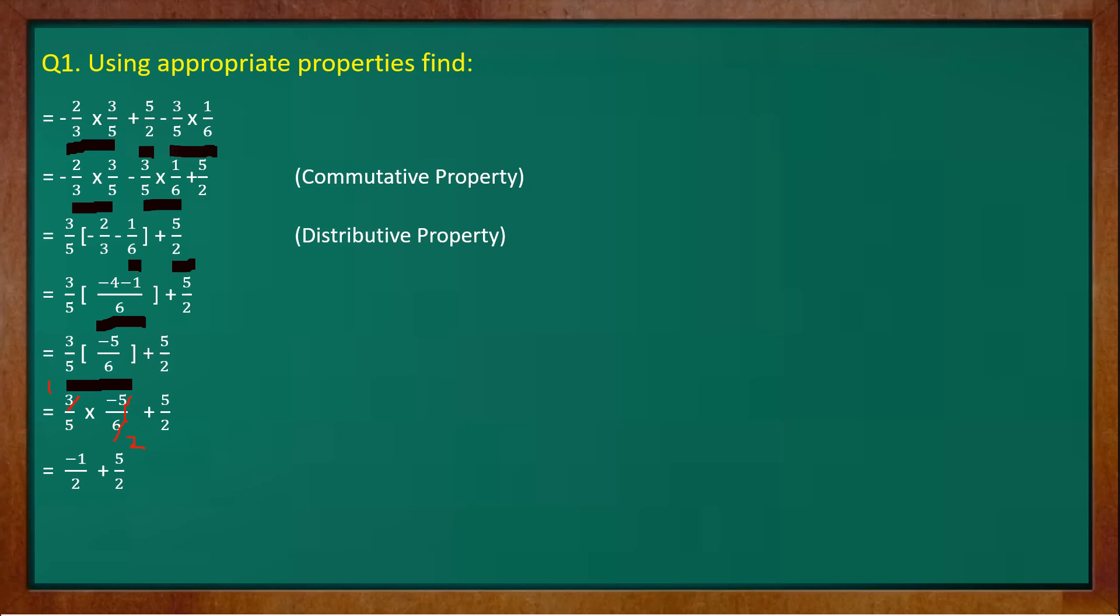Now again we have to take the LCM. So the LCM of 2 and 2 would be 2. In numerator we will get minus 1 plus 5 upon 2. Minus 1 plus 5, using integers, will give you 4 upon 2 and now we can reduce this fraction or rational number, 2 ones are 2 and 2 twos are 4. So the answer is 2.